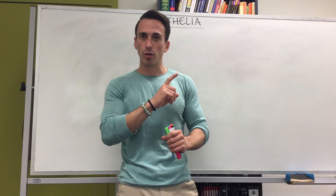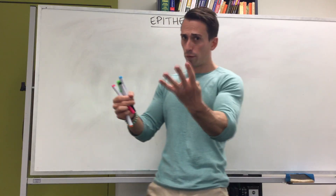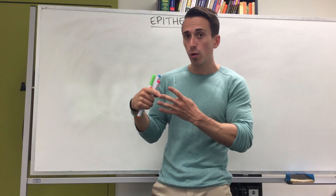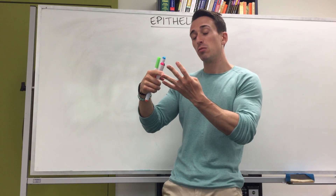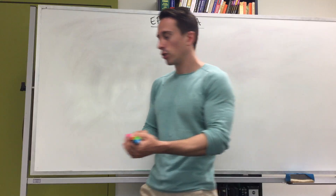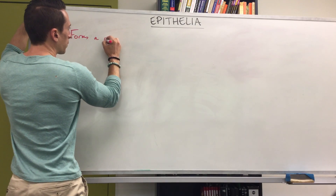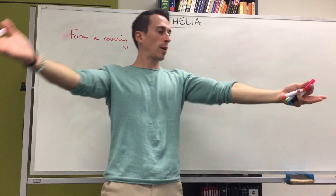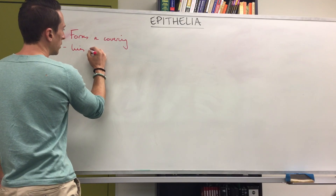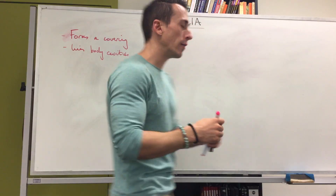First, what does epithelial tissue do? Epithelial tissue is a covering. Broadly describing all four tissue types: epithelial tissue is a covering, connective tissue is there to support, nervous tissue is there for communication and control, and muscular tissue is there to provide movement. Epithelial tissue forms a covering — when you're looking at me right now you're looking at my epithelial tissue — but it also forms a covering that lines body cavities.